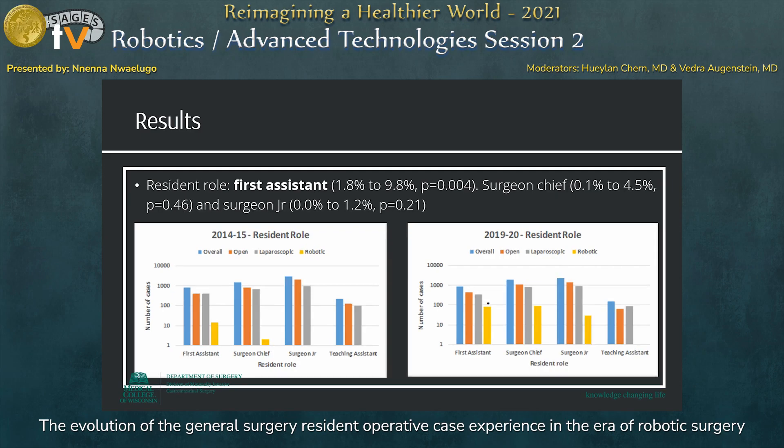Finally, the resident role with a significant increase in robotic cases was first assistant, where they increased from 1.8% to 9.8%, with no significant changes seen as surgeon junior or surgeon chief.